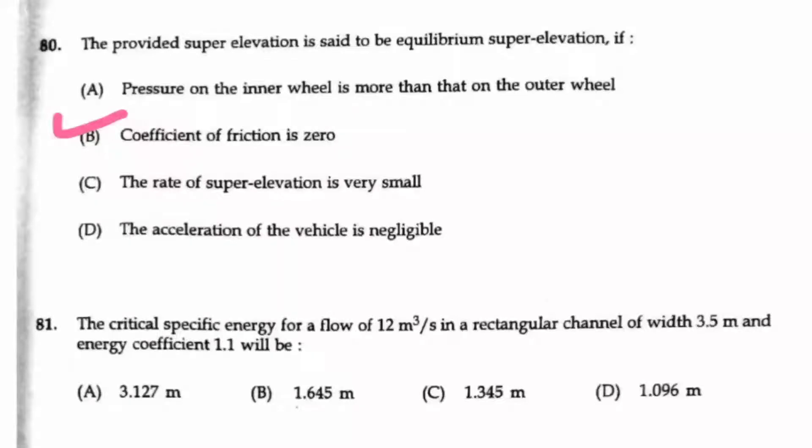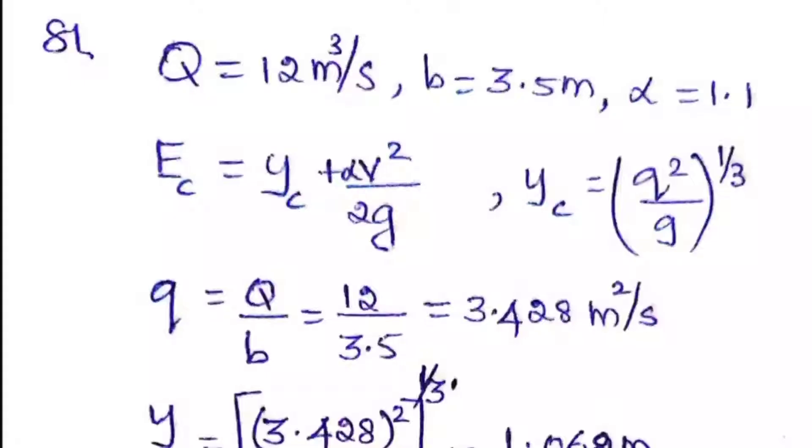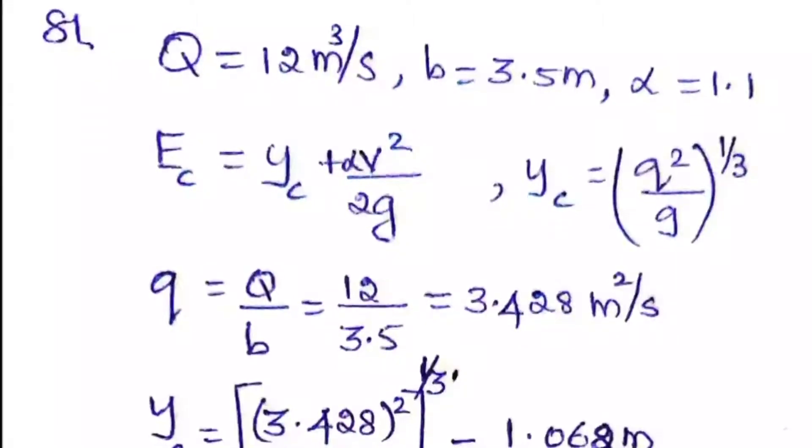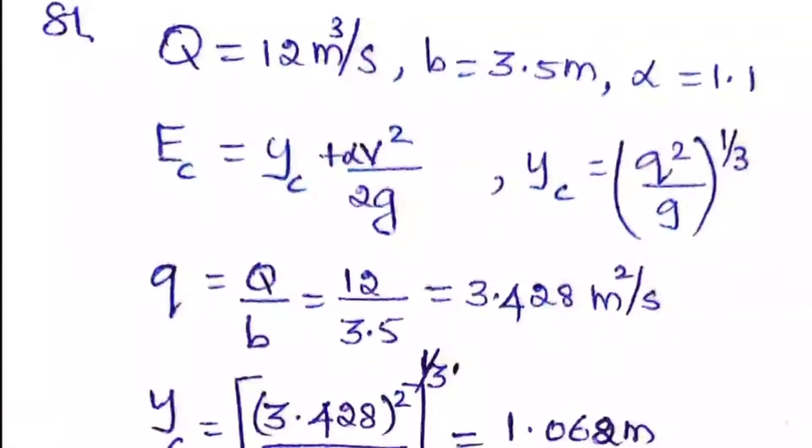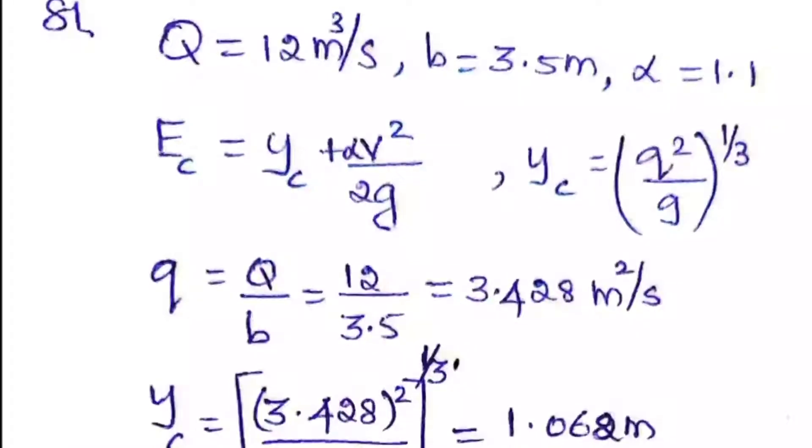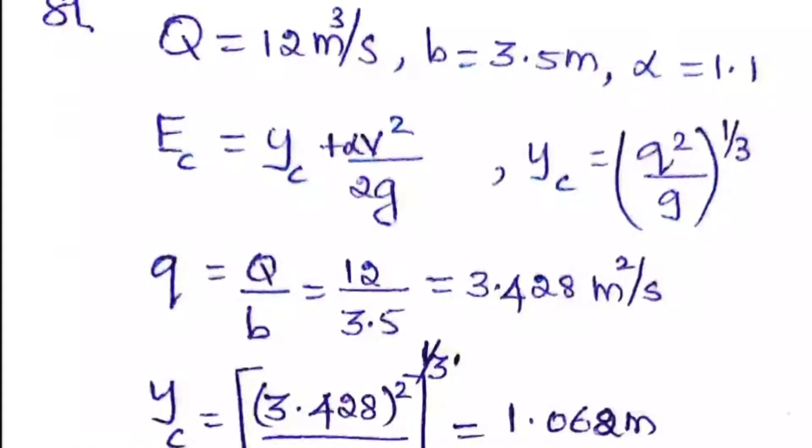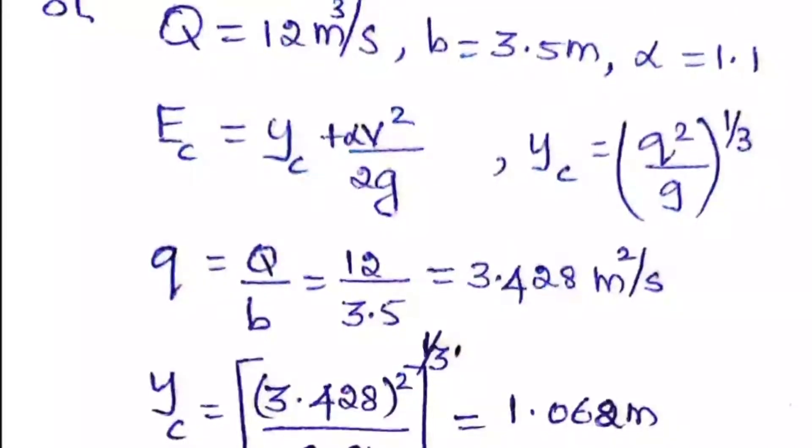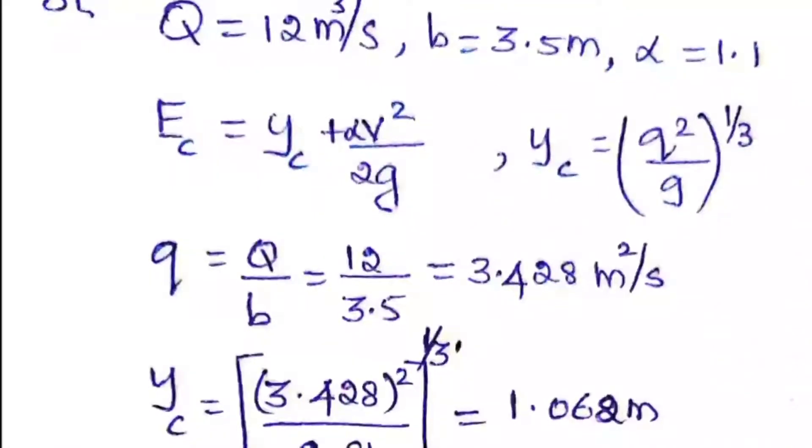Question number 81. The critical specific energy for a flow of 12 meter cube per second in a rectangular channel of width 3.5 meter and the energy coefficient 1.1 will be dash. So here, the given data first we have to take it as Q and B and the alpha coefficient they have given. So we know that the specific energy EC will be equal to YC plus alpha V squared by 2G. So YC, if you want to calculate, it is Q squared by G, the whole power of 1 by 3, that is the cube root.